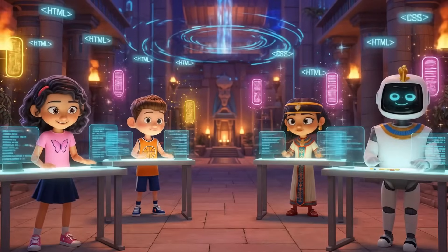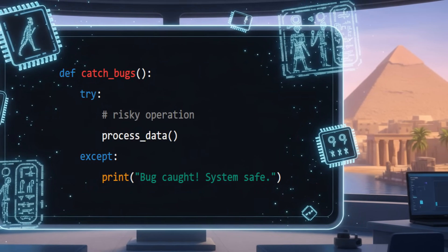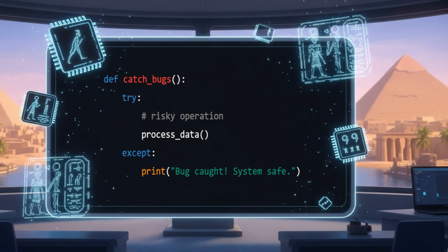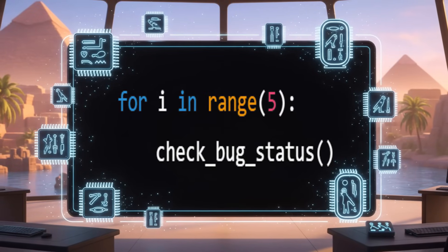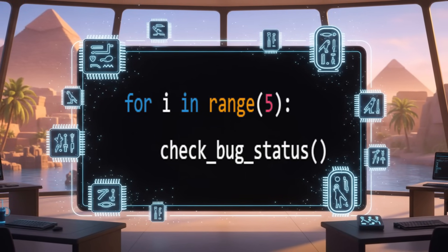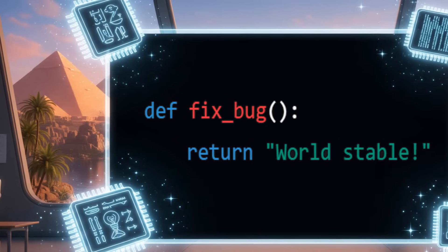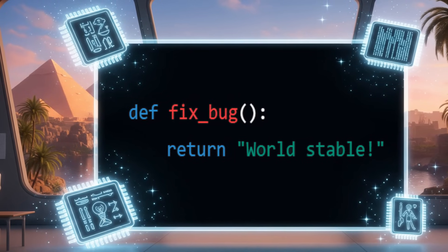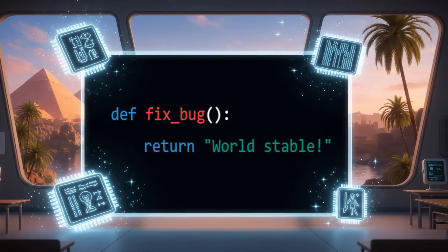Let's compile the code. This is my function catch_bugs — a named block of instructions we can reuse anytime. The try part tells the computer: run this code but be careful, it might cause an error. And if an error happens, the except part catches it so the whole program doesn't crash and we can handle the problem gracefully. This is my loop — it repeats a task multiple times, counting from zero to four, calling check_bug_status() five times to keep checking if the bug is still causing problems. And here's my function fix_bugs() return statement — it sends back a value after running. Return 'world stable' means the program finished successfully, confirming everything is working again.